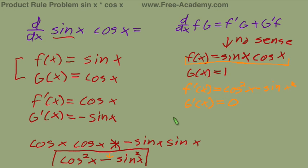f prime, cosine x squared minus sine squared x, times g, which is one, plus g prime, which is zero, multiplied by f, sine x cosine x.